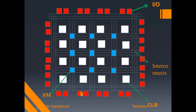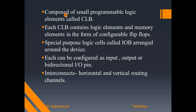This is the overall view and the detail of the FPGA architecture. First, we have the input/output block on the outer layer. Then we have CLBs. Between CLB and CLB, and between CLB and the input/output block, we use interconnects and the switching matrix. FPGA is mainly composed of small programmable logic elements known as CLBs — Configurable Logic Blocks.